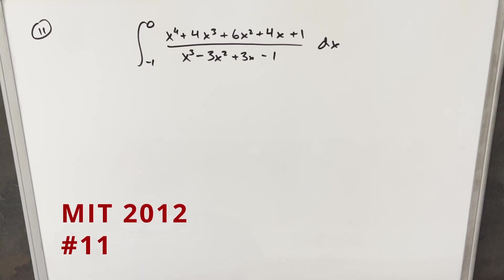Okay, we have here another integral from the MIT integration. This one's from 2012, problem number 11. We're integrating from minus 1 to 0 of this whole expression, dx.